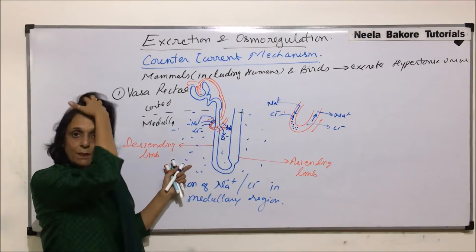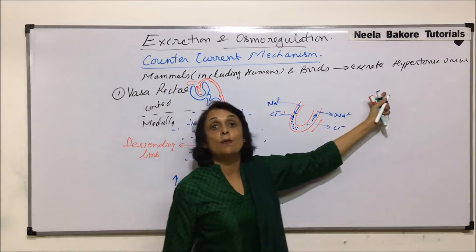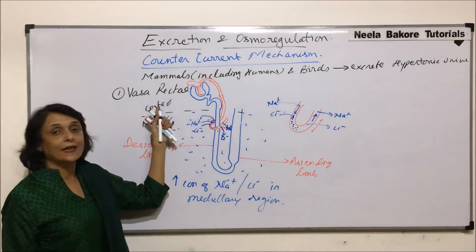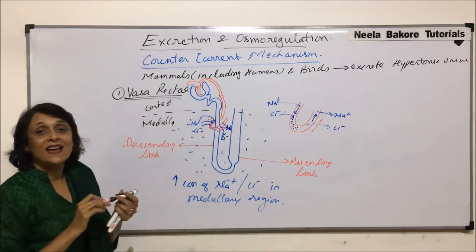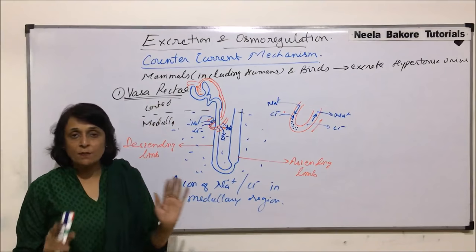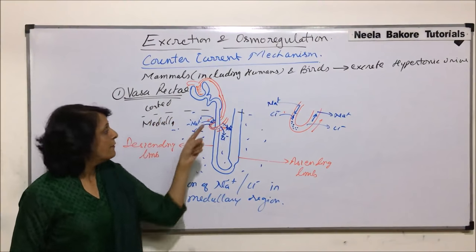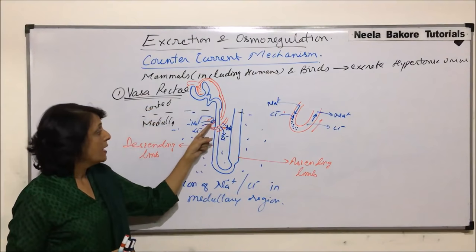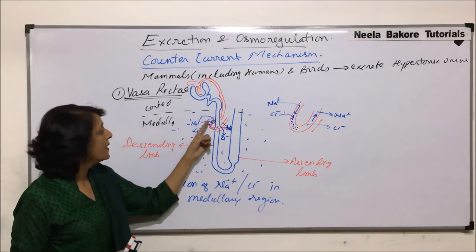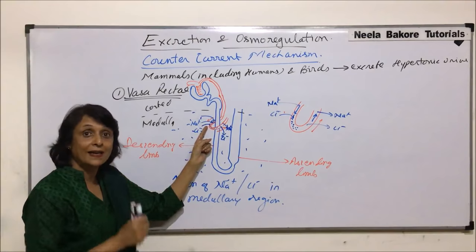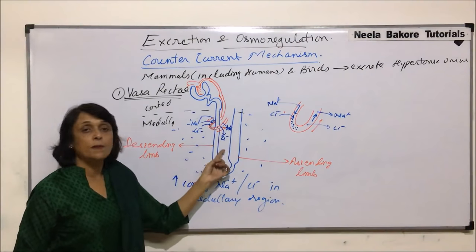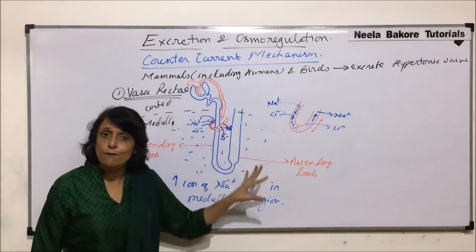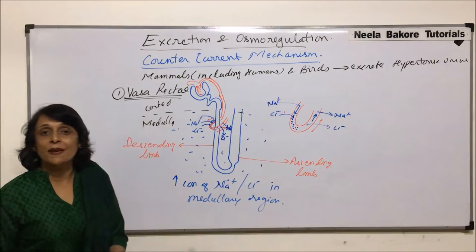Why are all these things being done? Because the urine to be excreted should be hypertonic so that more and more water can be taken back. So one counter-current works in the vasa recta — the capillaries around the loop of Henle. One arm brings blood deeper into the medullary region; the other takes it back up. Sodium and chloride ions enter the descending arm and exit the ascending arm, remaining in the interstitial fluid. This is one place where counter-current mechanism is working.